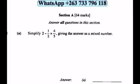Section A, this is with 64 marks. You are required to answer all questions in this section. Number 1: Simplify 2 minus one-half times four-fifths, giving your answer as a mixed number. So we want to give our answer as a mixed number, not as a proper number. I encourage you to use a calculator.